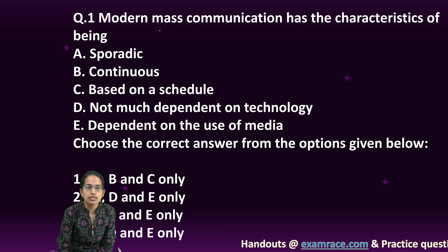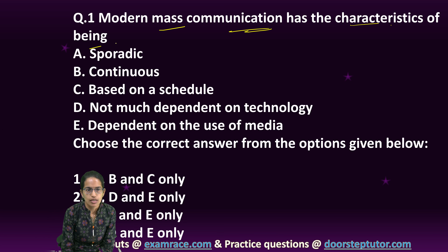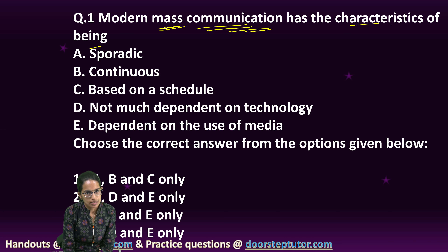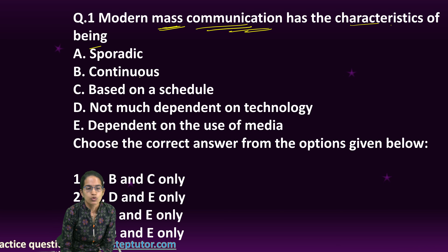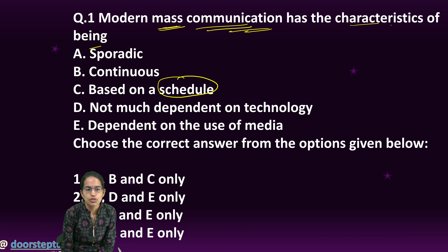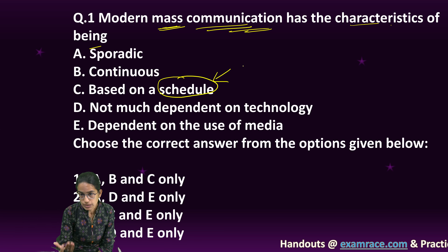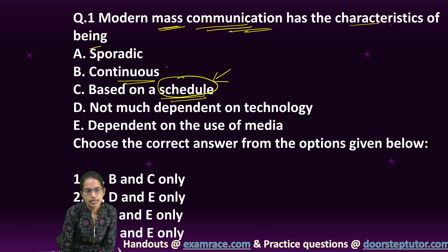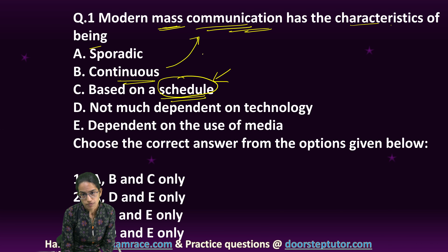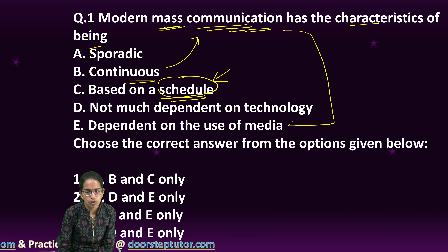The first question is: modern mass communication has the characteristics of being. Mass communication, as the name suggests, is intended to reach many people. So there has to be a definite schedule because people must know at what time what would be broadcasted. This schedule should be continuous — any interruptions would mean unsuccessful communication.